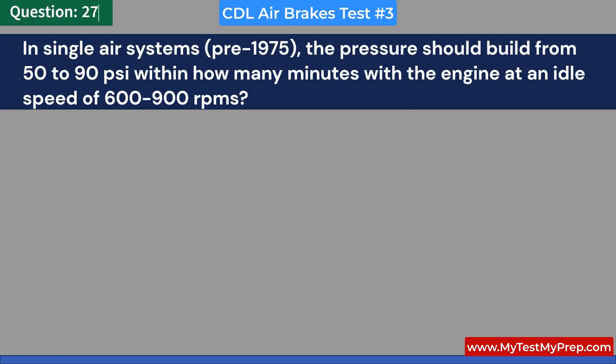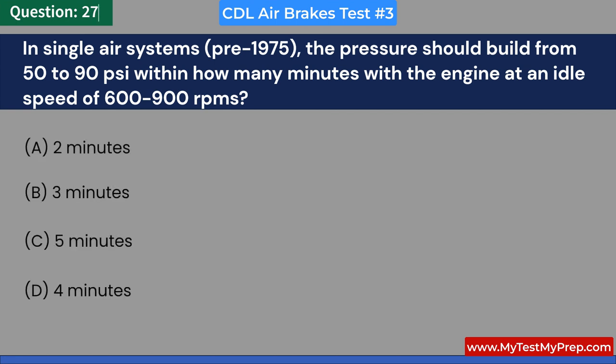In single air systems pre-1975, the pressure should build from 50 to 90 PSI within how many minutes with the engine at an idle speed of 600 to 900 RPMs? A. 2 minutes. B. 3 minutes. C. 5 minutes. D. 4 minutes. Answer: B. 3 minutes.